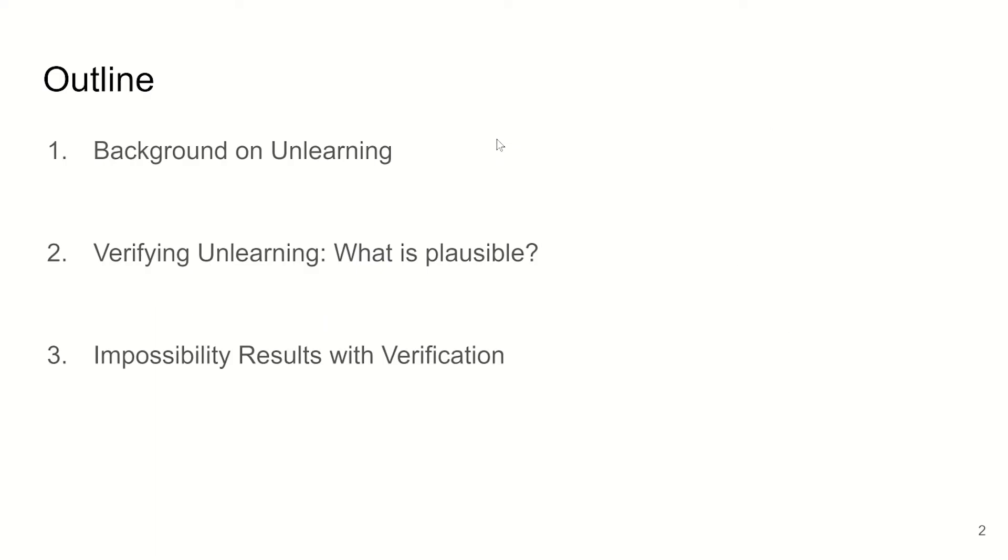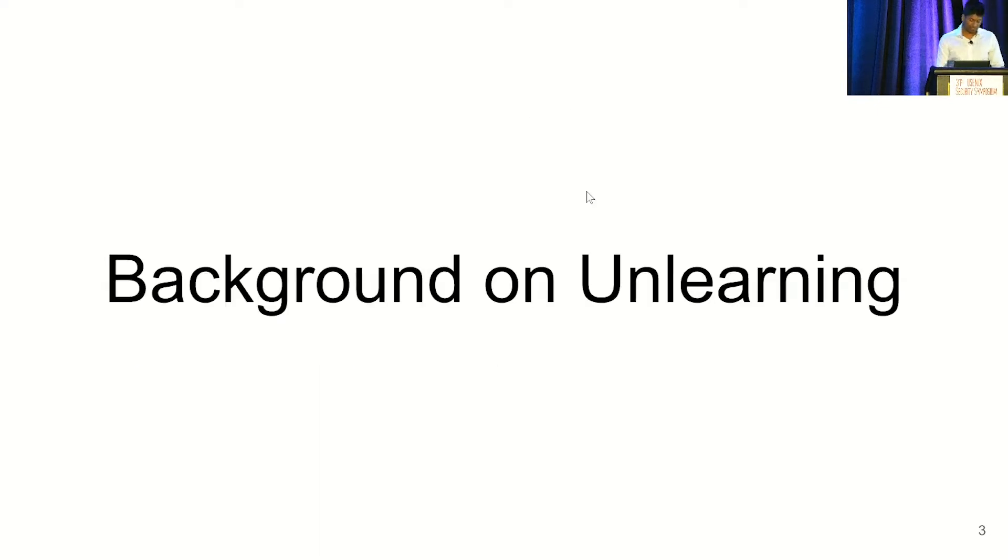A quick outline of the talk. I'll first give a brief background on unlearning. What is it? Why do we care? And a high-level taxonomy. Then we'll move to the question of what it might mean to verify unlearning and really the question of if given a model, what's the plausible data it could have trained on? And going from that, I'll present some impossibility results on verification.